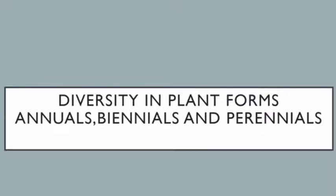Unit one deals with the first chapter: diversity in plant forms — annuals, biennials, and perennials. Angiospermic plants show great diversity in their form, structure, shape, size, etc. This diversity in angiospermic plants is due to their adaptive specializations over a long period of time, due to climatic changes and evolution.